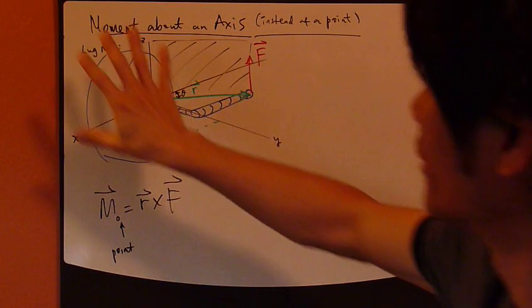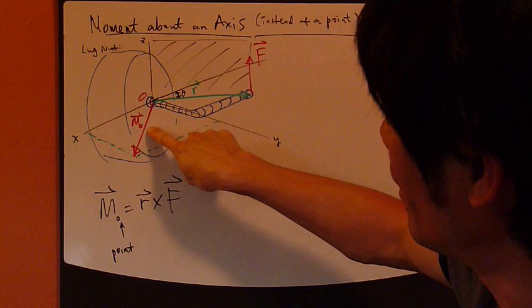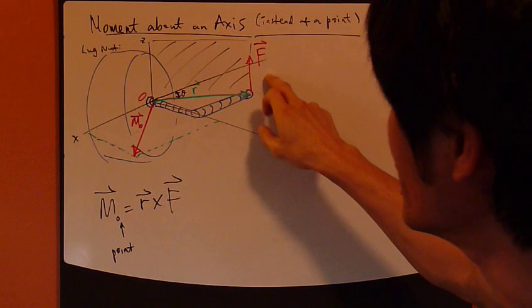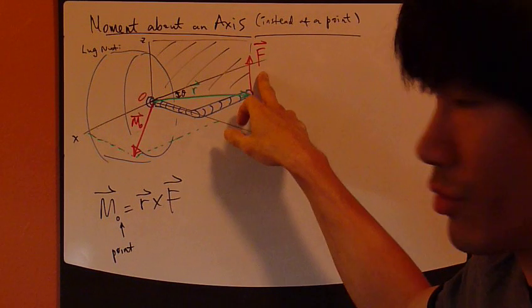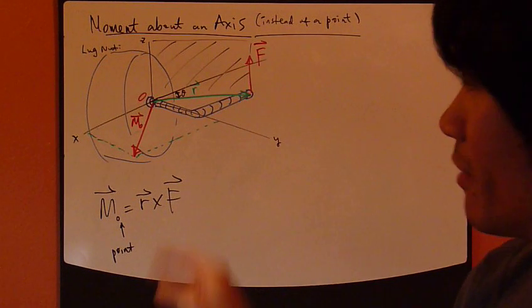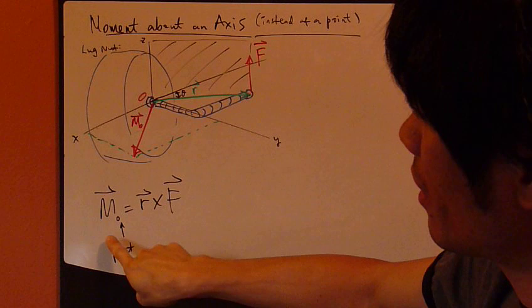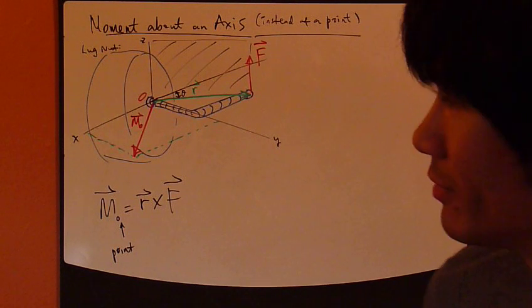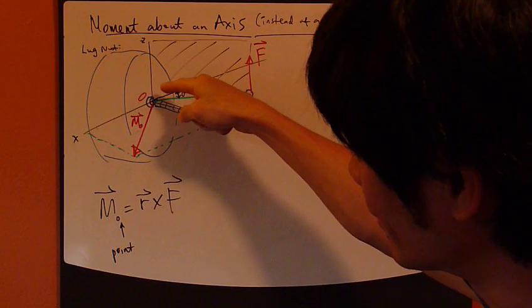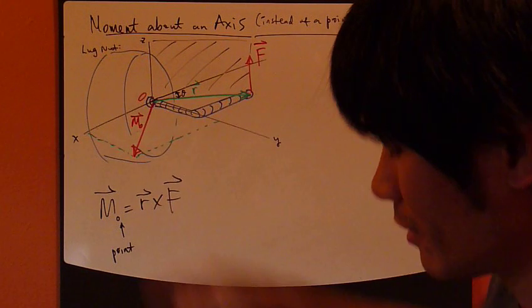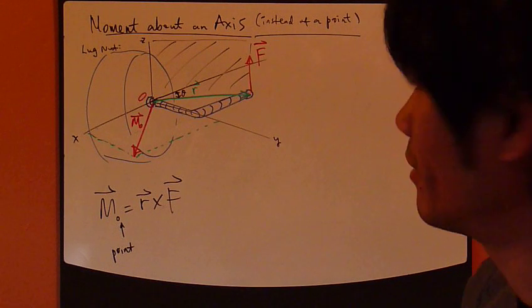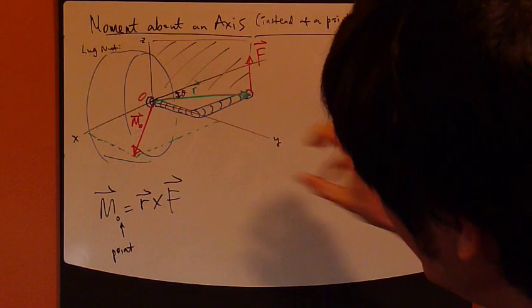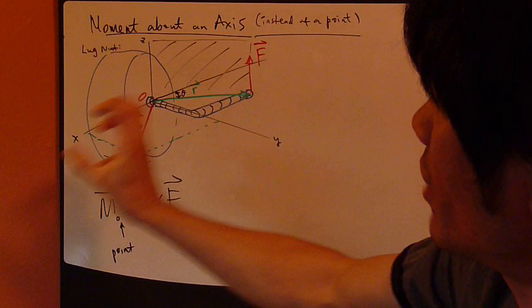The question is, in this particular application, this lock nut application, is M-not meaningful? Is it a good measure of the effectiveness of this force right here as far as taking this lock nut out of this wheel? This M-not moment about point O is not a good measure of the effectiveness of this lock nut coming loose, because this lock nut can only go in one direction. It can only travel in the Y direction. It cannot go in the X or Z direction, that's constrained.